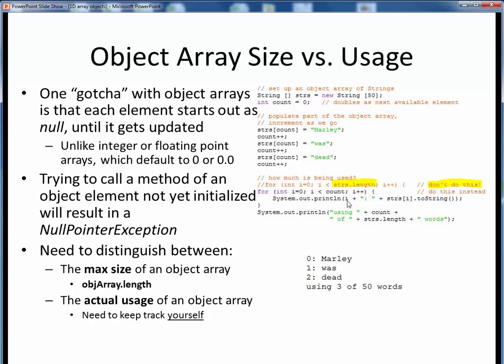We also print this message which shows the difference between the used portion 3 and the total array size 50, giving us this output shown at the bottom.